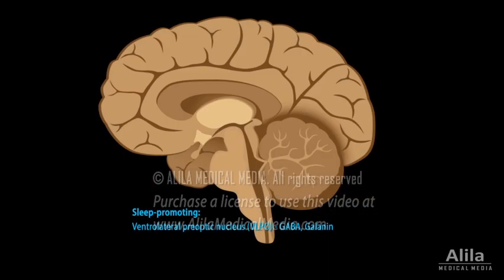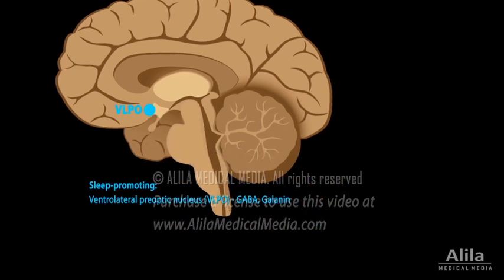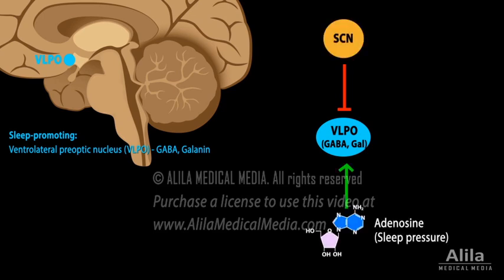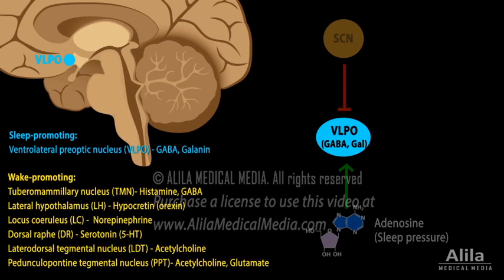The sleep-promoting region is located in the ventrolateral pre-optic nucleus, VLPO, of the hypothalamus. The VLPO is inhibited by the SCN and activated by adenosine. The VLPO uses GABA to inhibit wake-promoting regions of the brain, which include multiple nuclei in the reticular formation and posterior hypothalamus.